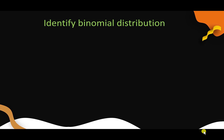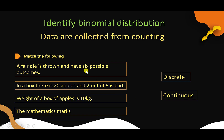How to identify binomial distribution? Identify it from the types of data it uses. For binomial distribution, it is a discrete distribution, so we must know that the question will use discrete types of data. Discrete data can be known by counting. For the examples below, we match whether each is discrete or continuous. First example: a fair die is thrown and has 6 possible outcomes. A die has 6 surfaces numbered 1 through 6, so it is clearly discrete data.